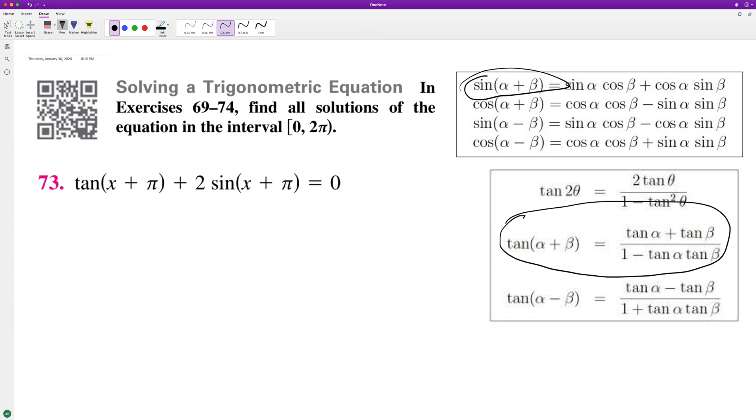All right. So starting off, we'll get tangent of x plus tangent of π over 1 minus tangent of x tangent of π plus 2 times the sine. Actually, it's going to be 2 times sine of x cosine of π plus cosine of x sine of π.